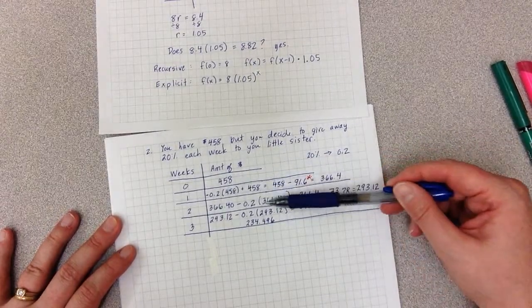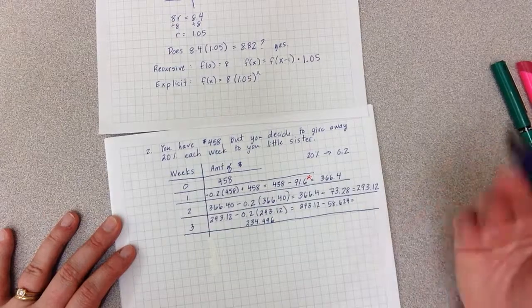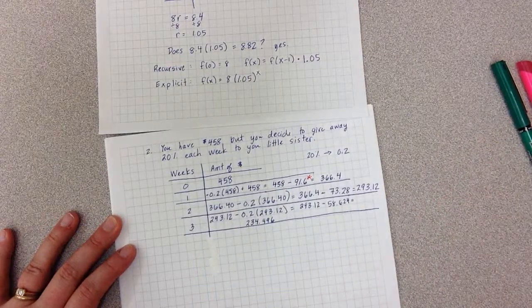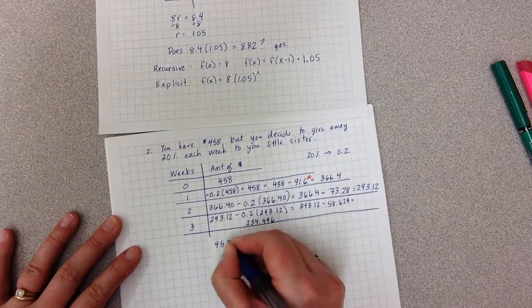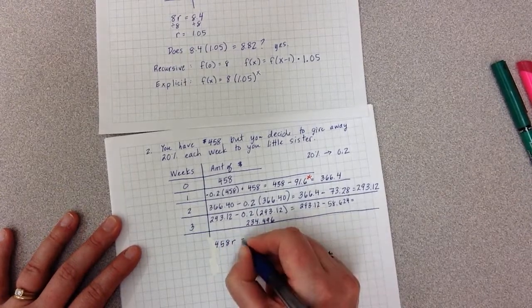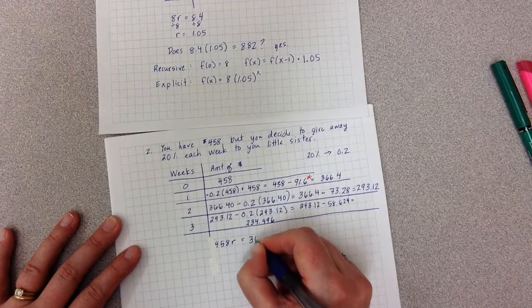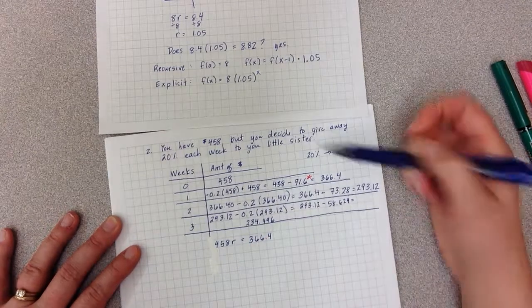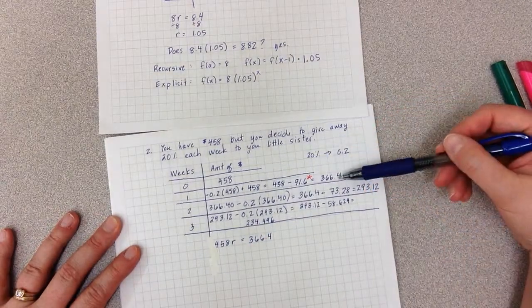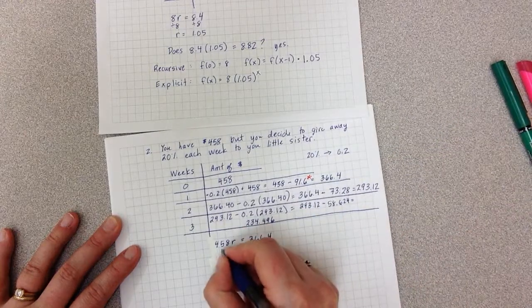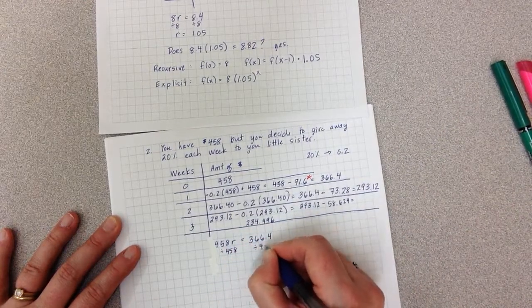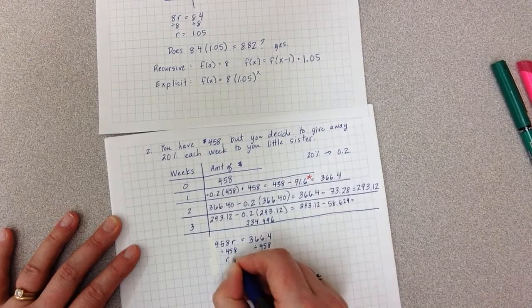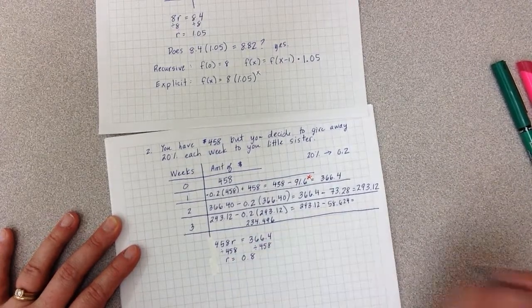Because I'm multiplying by something each time, I'm going to guess that I have a geometric sequence, so I'm going to set the equation 458 times a common ratio equals 366.4, so it'll go from my week zero to my week one. I divide both sides by 458, and I find that r equals 0.8.